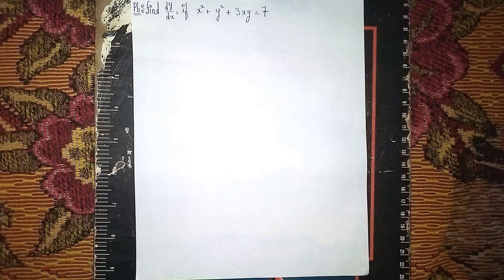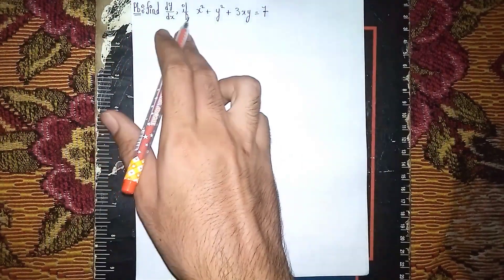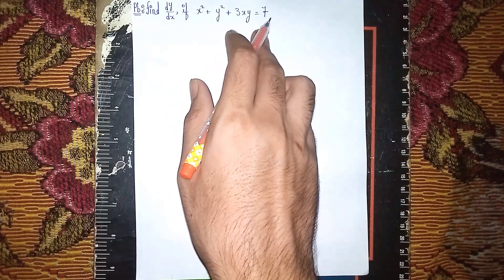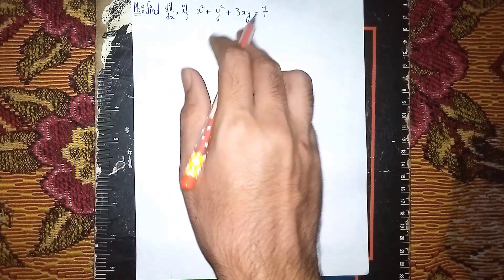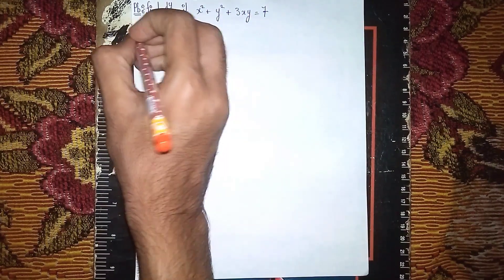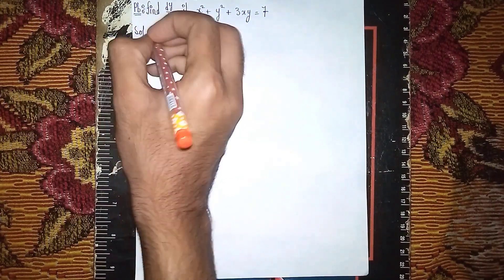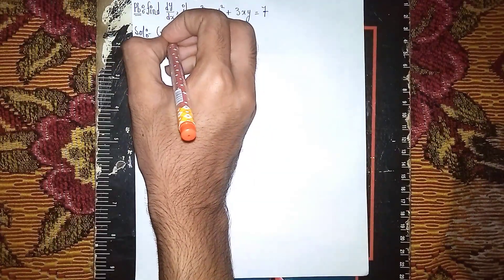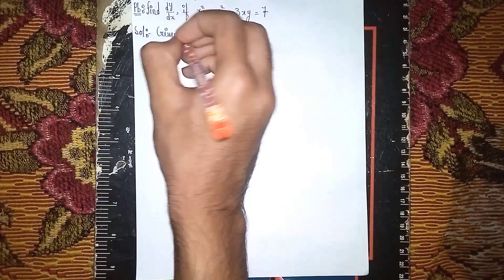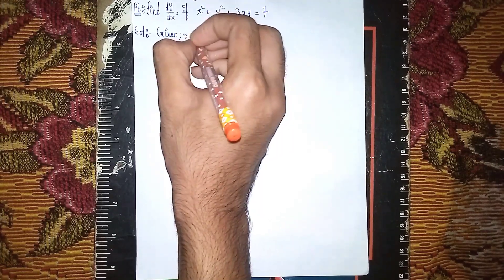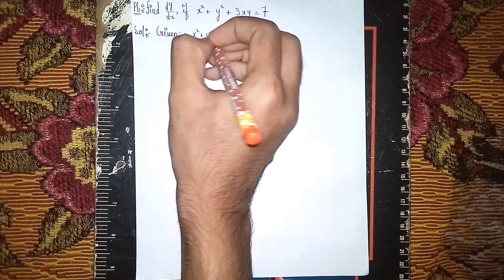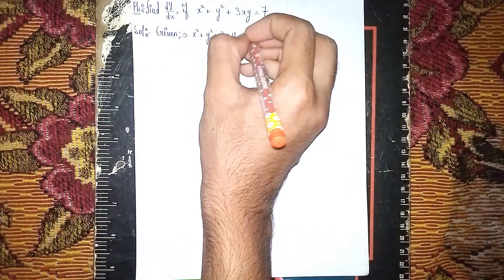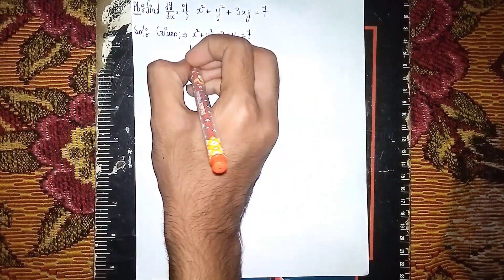Hello, welcome back to my channel. The question is: find dy/dx if x² + y² + 3xy = 7. This is our differentiation question. First, write the solution. What is given? Given: x² + y² + 3xy = 7. Now differentiate.